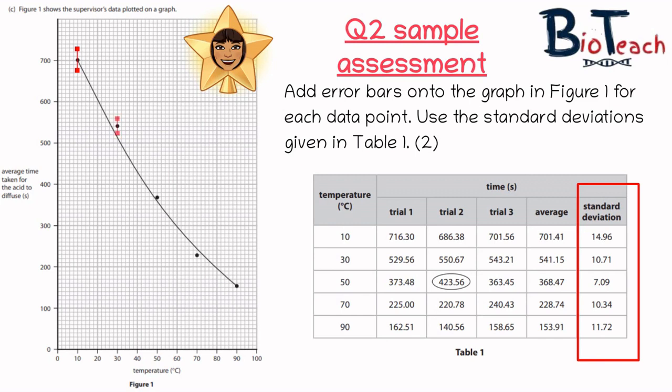The second error bar will go onto the 30 degree temperature and this time the center of the error bar is exactly where the average has been identified and it would go 10.7 up and 10.7 down. The third error bar is a little bit wonky but you understand what I'm trying to say - these should be straight. It would go 7.09 up and 7.09 down and the middle would be the average point. Then the fourth one would be 10.34 up and 10.34 down and the center of the error bar would be on the average of that particular data point. And then lastly you've got 11.72. It would go for the 90 degrees - it would go 11.72 up and 11.72 down.